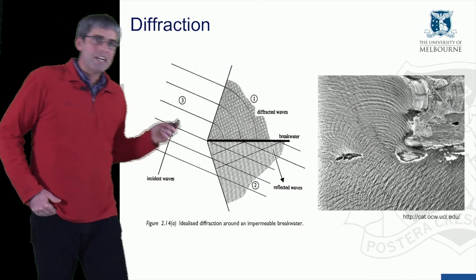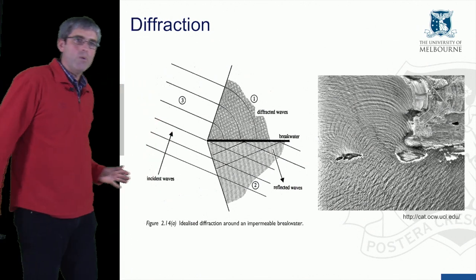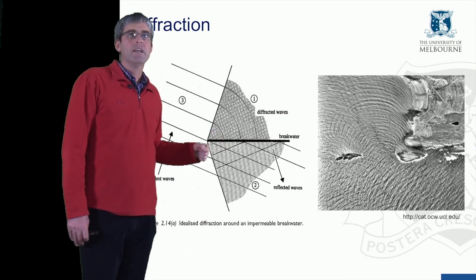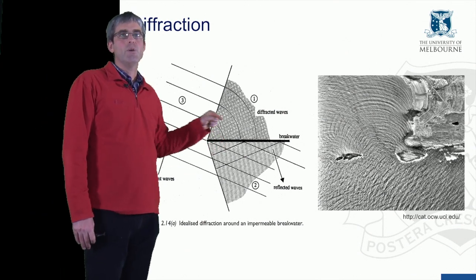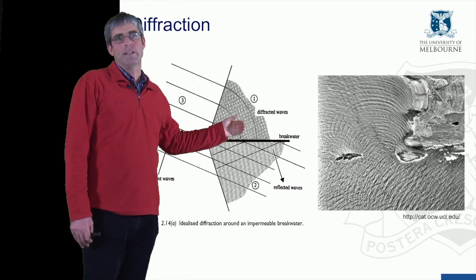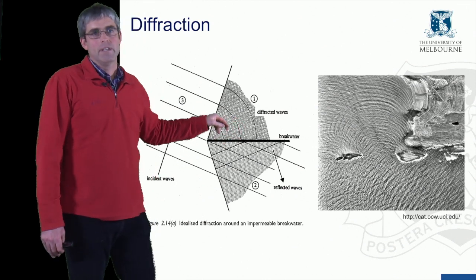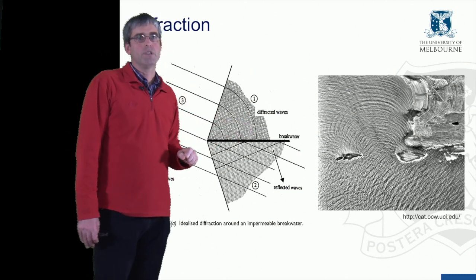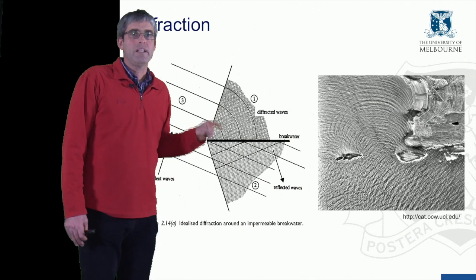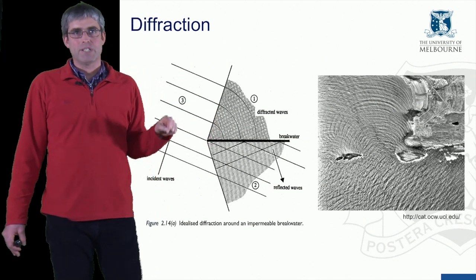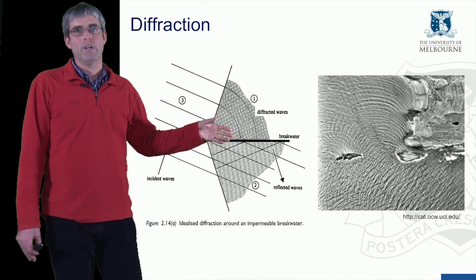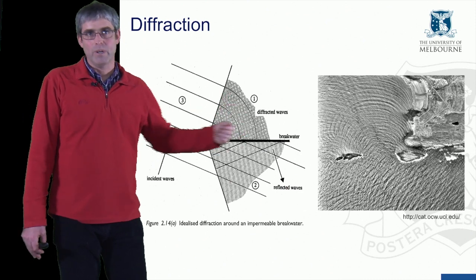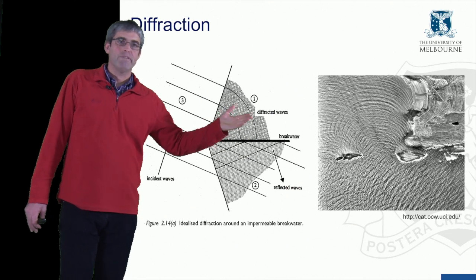And finally, diffraction. That's where a wave approaches an opening or the end of an object. Around the end, you get curving of the wave and a sort of transformation of the wave below or around that obstacle. You're also likely to get refraction with diffraction because you get a shallowing of the water as a result of the obstacle, or because the obstacle is built there because there's shallow water. And so you're also going to get refraction.